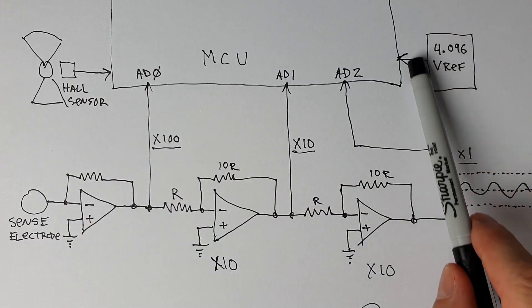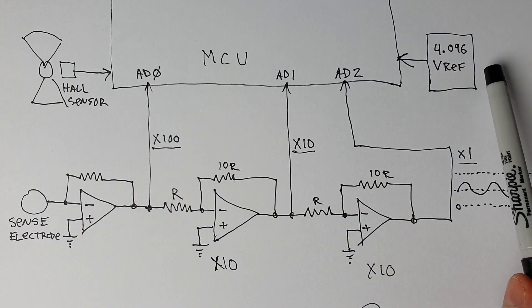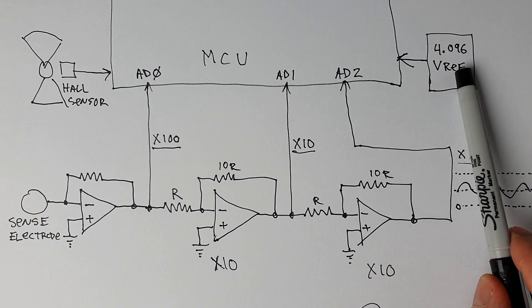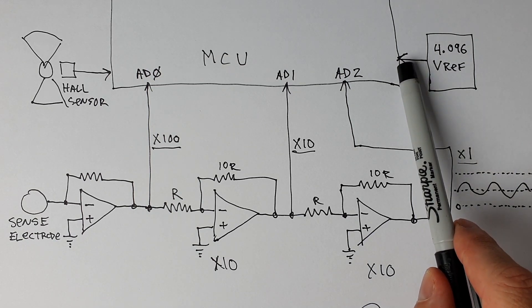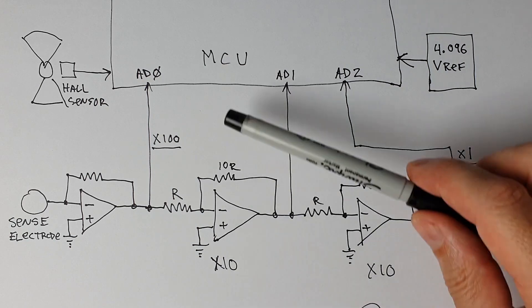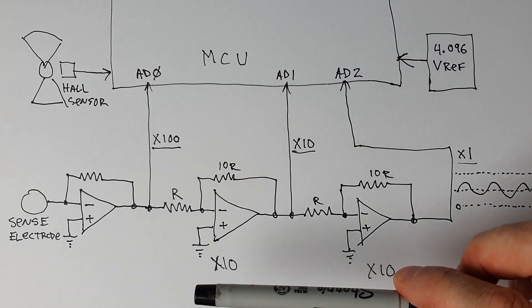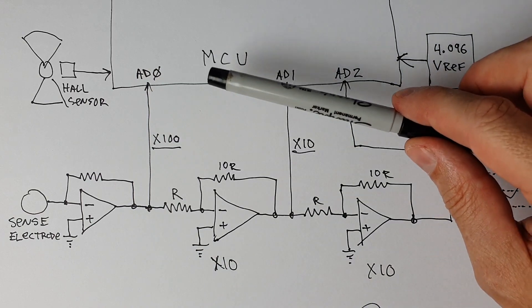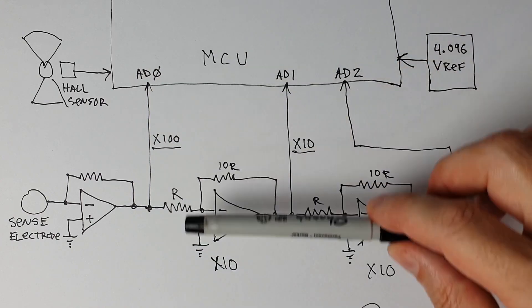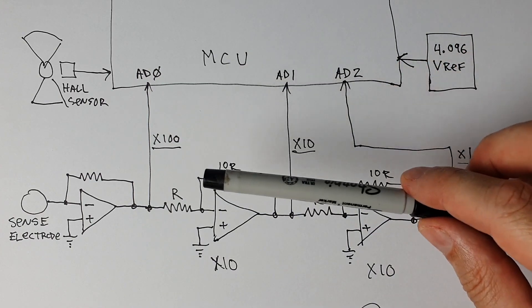We also have an external 4.096 volt reference, which feeds the analog to digital converter. So all of the analog to digital converter readings are in the range from 0 to 4.096 volts. That's the minimum and maximum range.